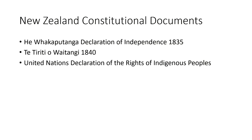The United Nations Declaration on the Rights of Indigenous Peoples was signed by most countries in 2007. In 2010, the New Zealand government ratified it. The current government is making firm commitments to decide how this country can honour UNDRIP. So for anyone working in AI, these three documents — He Whakaputanga, Te Tiriti, and UNDRIP — will be essential for your work.